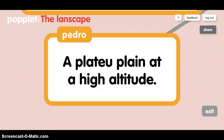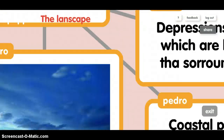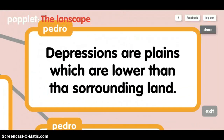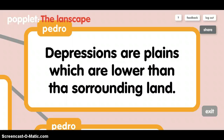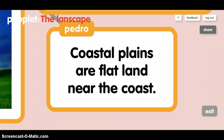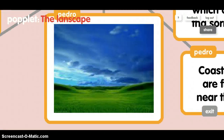A plateau is a plain at high altitude. Depressions are plains which are lower than the surrounding land. Coastal plains are flat areas near the coast.